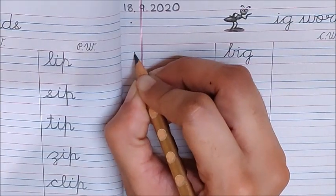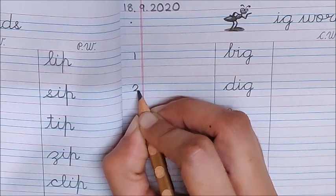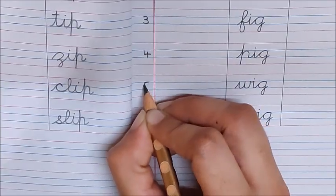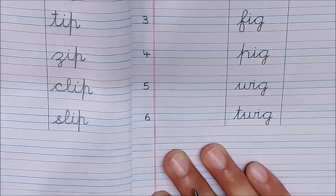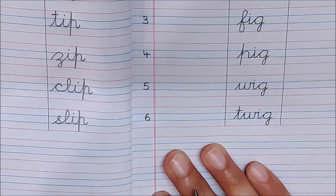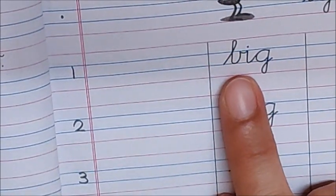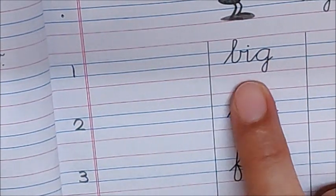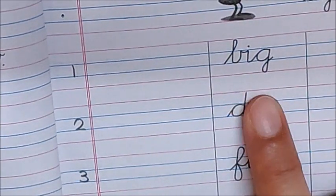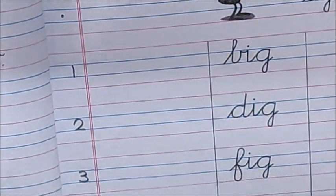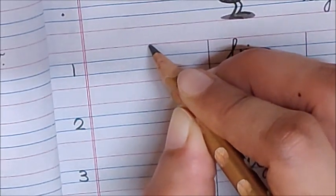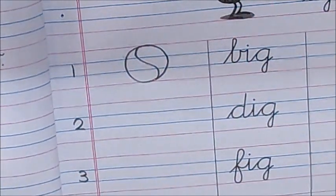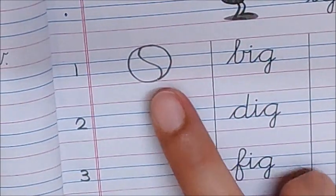Now write the numbers. Below the dot write one, two, three, four, five, six. So we have six words on this page. Now keep your pointer finger and read this word. Ba, i, ga, big. Big means bada. So children here I am drawing a big ball. Look at this ball. This is so big. A big ball.